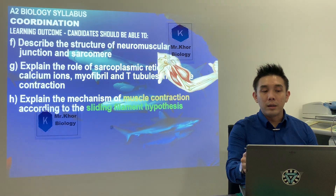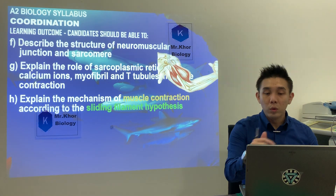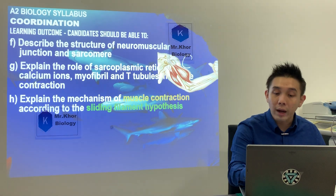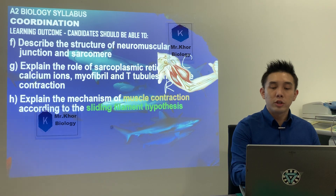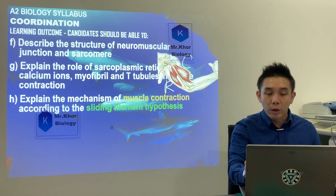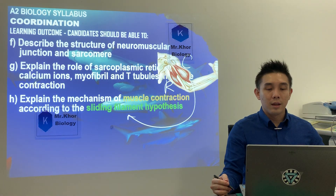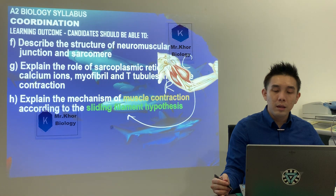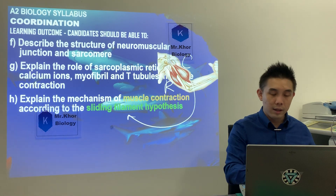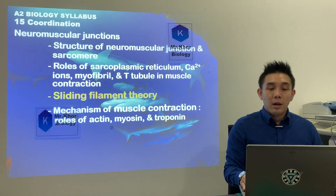Last time in high school we learned that as long as one muscle contracts and one relaxes, we are able to carry out the movement. But there's something beneath that which we call sliding filament theory. To understand muscle contraction, we first have to look at the muscle itself — let's zoom into how the muscle fiber actually looks like.